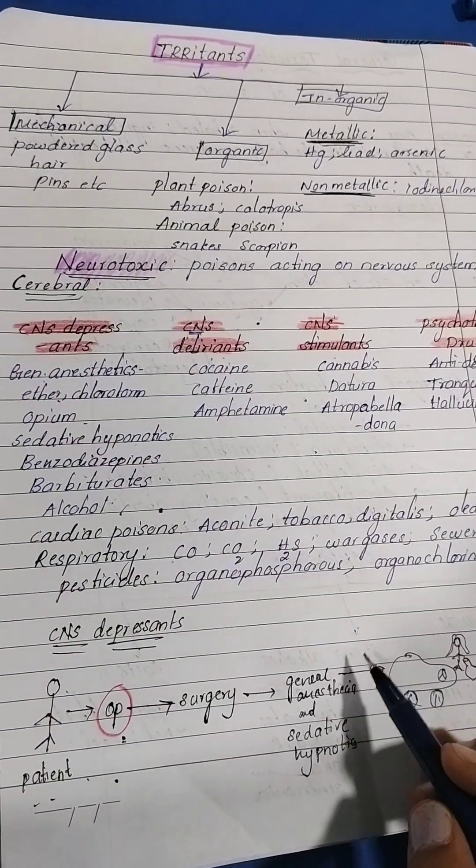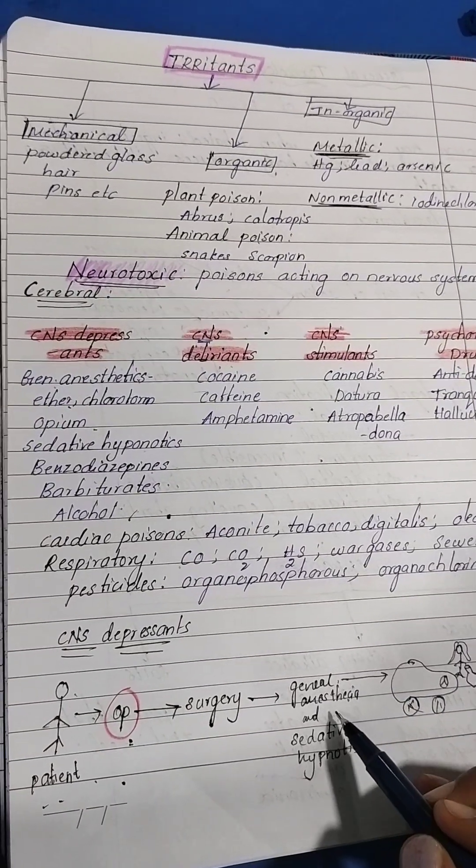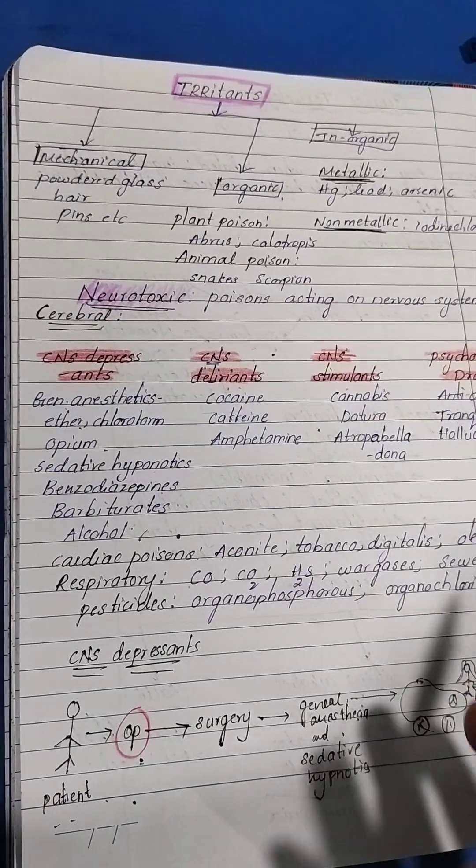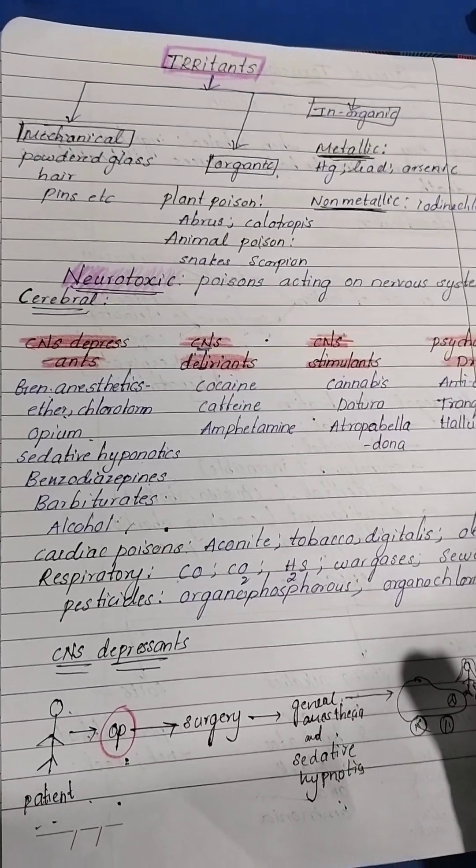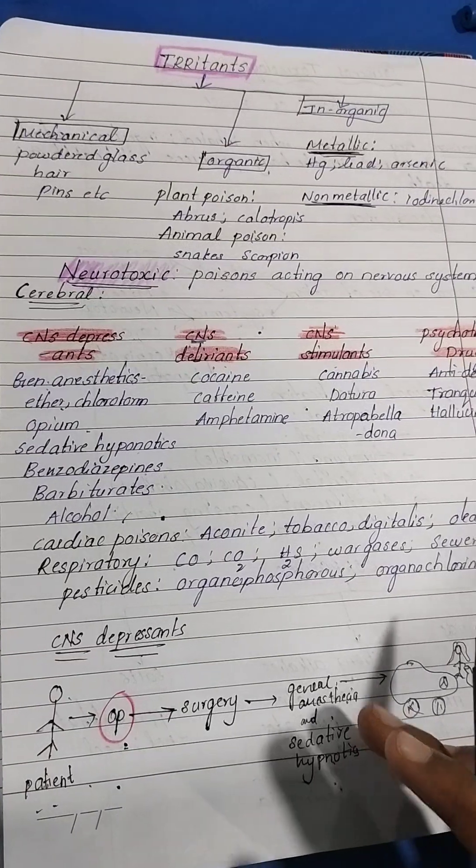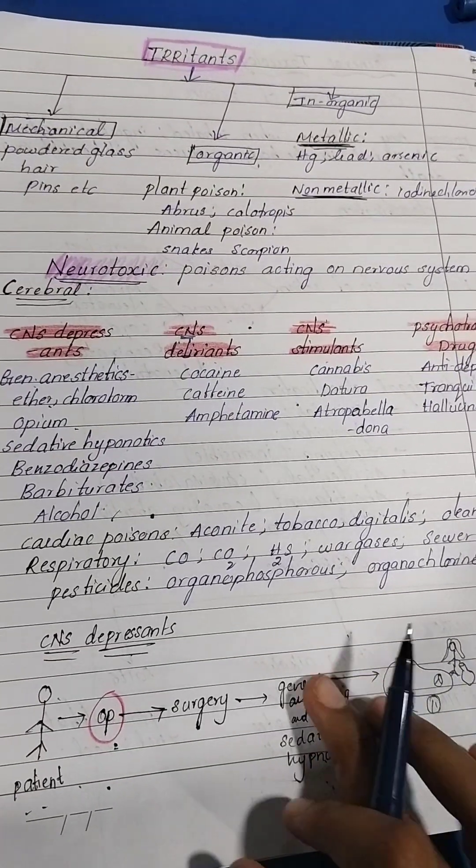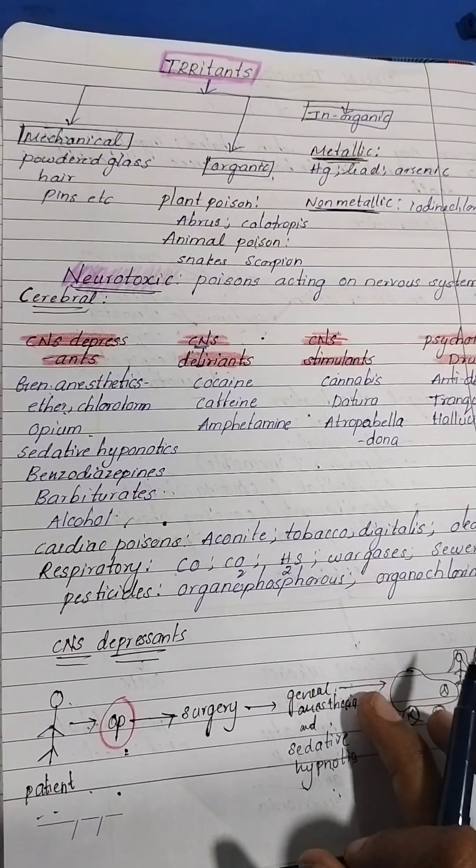What they gave him was ether and chloroform, and sedative hypnotics because they cause sleep in the patient. So they gave sedative hypnotics, ether, and chloroform. The doctor came out and was staring out of the window.